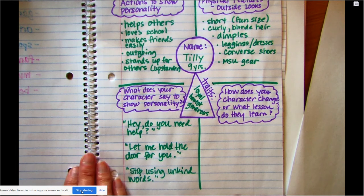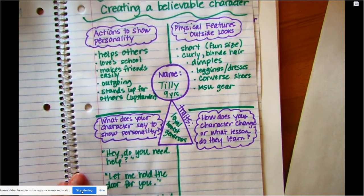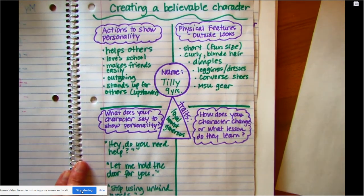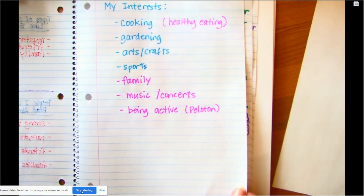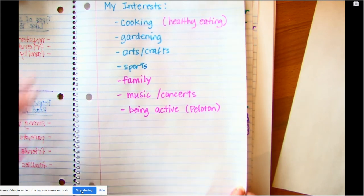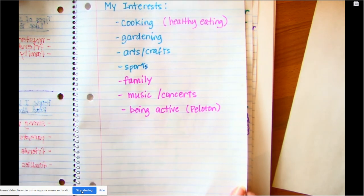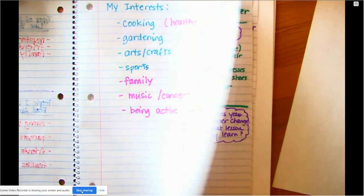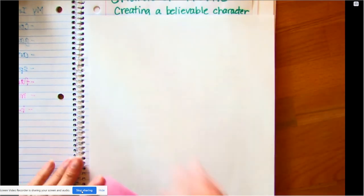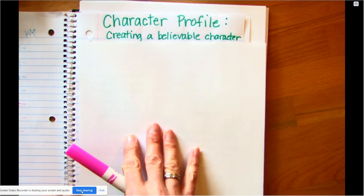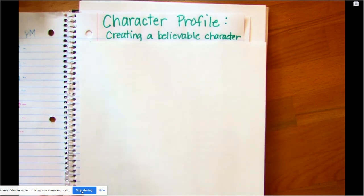So you're going to be drawing this in your writer's notebook. I'm going to do it on a blank piece of paper so that you can see it, but you're going to want to go and find the next page in your writer's notebook after you wrote down your interests. Find your next page. And we're going to start with our title first. So at the top of your page, I'm not going to rewrite that part for you. You're going to copy down Character Profile, Creating a Believable Character. Remember, just pause the video, write it down. And then when you come back, we'll do some drawing.